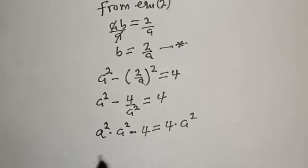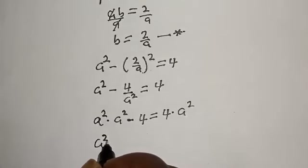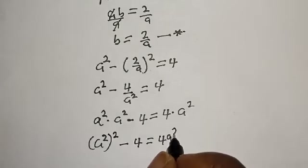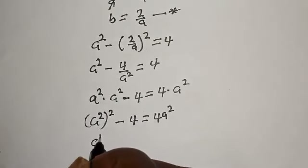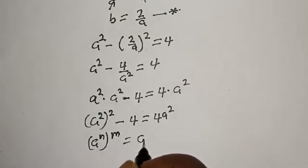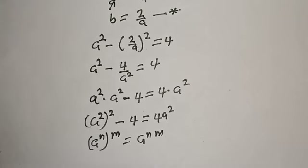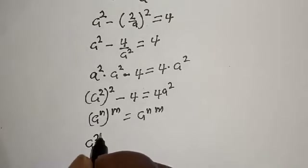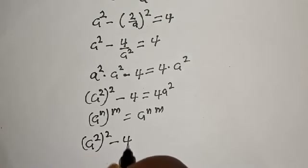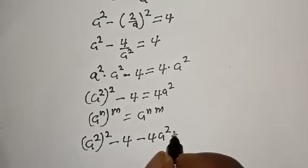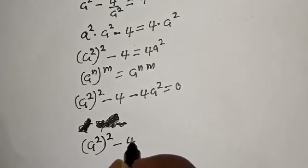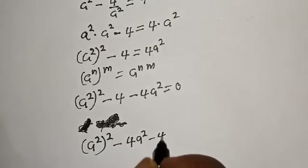If you multiply all through by a squared, you are going to get: a squared squared minus 4 is equal to 4a squared. Then rearranging, we have a squared squared minus 4a squared minus 4 is equal to 0.